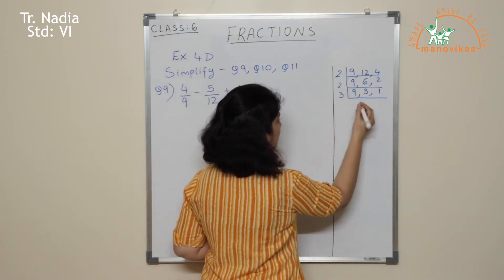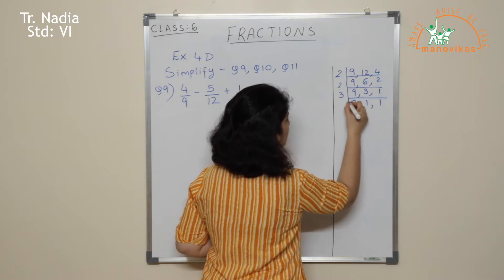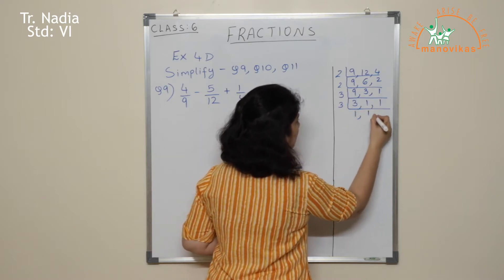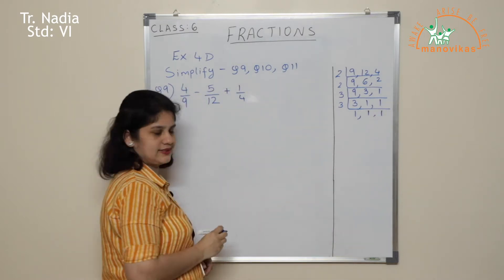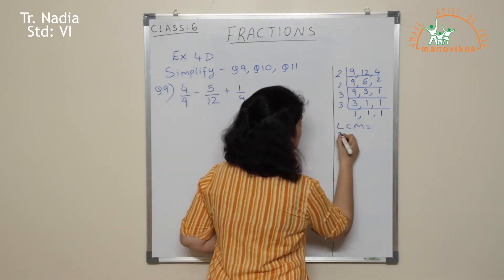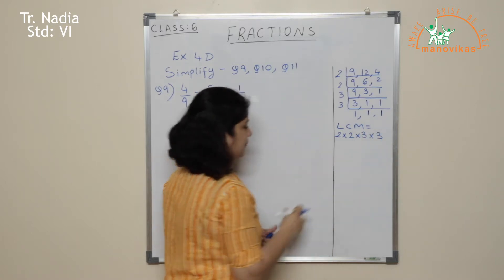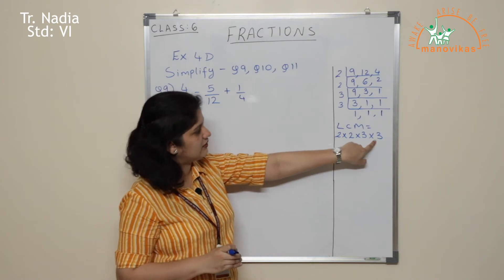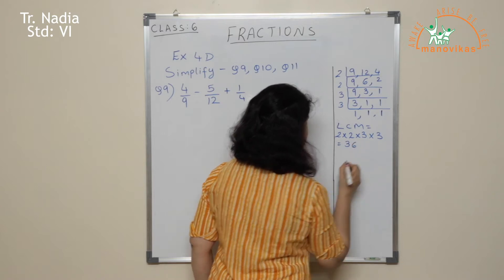So I take the next prime number, 3. 3 threes are 9, 3 ones are 3. This one comes down. Again I use 3: 3 ones are 3, ones come down as they are. So the LCM is 2 × 2 × 3 × 3. That is 4 × 3 = 12, and 12 × 3 = 36. So the LCM is equal to 36.